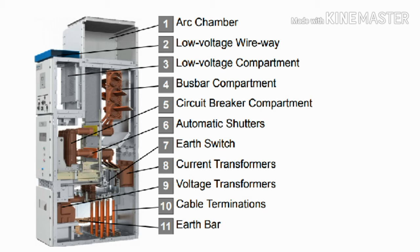The voltage transformer steps down the voltage to 110 volts, and that 110 volts helps to control the control supply of the switchgear panel. Tenth is the terminal cable termination — these are the outgoing connections of the switchgear panel that connect to the load.